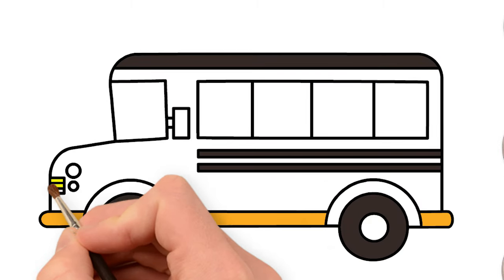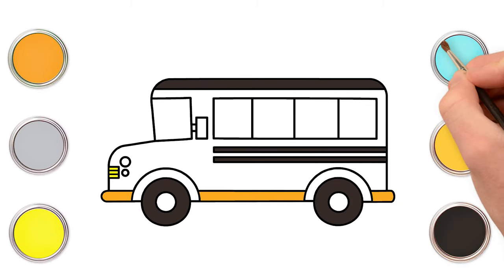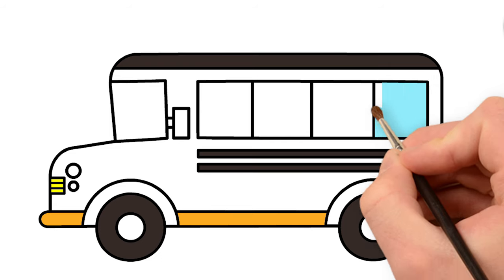Now use lemon yellow to fill the lines in the front side of the bus. Let's use sky blue to fill color in the windows.